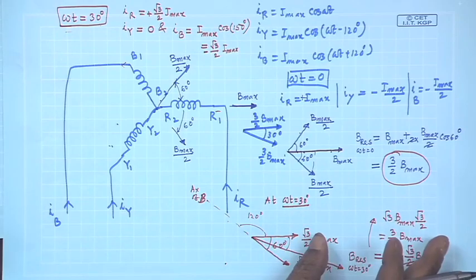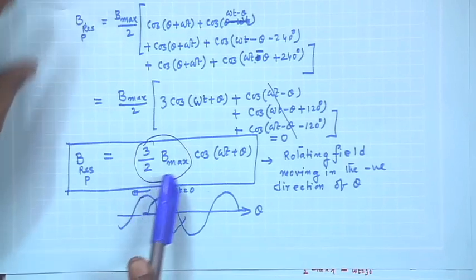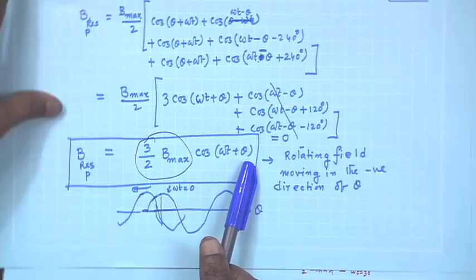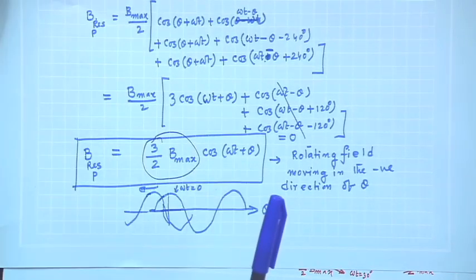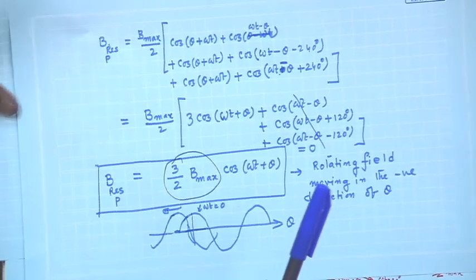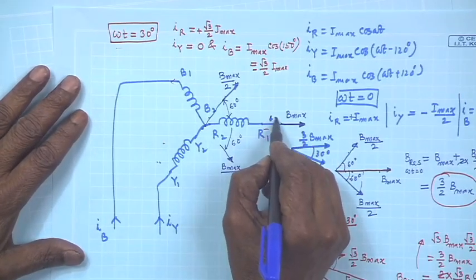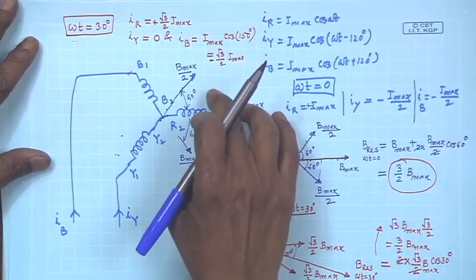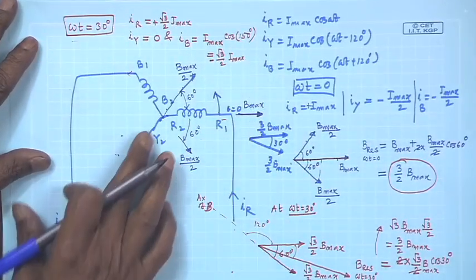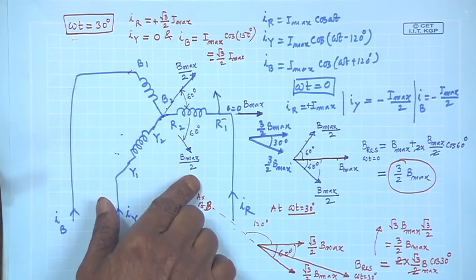The resultant field strength remains the same — 3 by 2 B max — and it moves 30 degrees in the clockwise direction. This is consistent with the result because we found that 3 by 2 B max cosine omega t plus theta is the equation, which tells us the resultant field is moving in the negative direction of theta. It has indeed moved in the negative direction while keeping its amplitude the same.